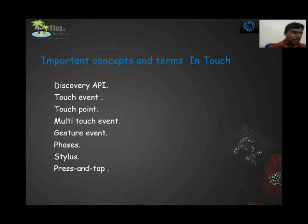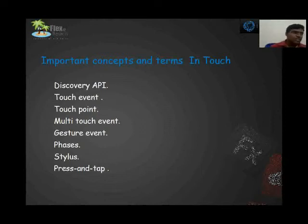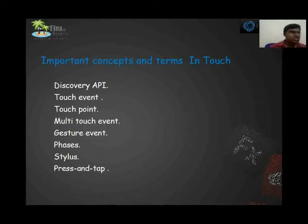A touch point means that each touch has a unique touch point ID. So if more than three images are on screen and the user presses the first image, by using this touch point we can set the alpha value to zero for each individual image independently. The multi-touch event involves placing fingers or a stylus at each point. The gesture event includes actions like enlarging, zooming, or swiping an image using fingers.